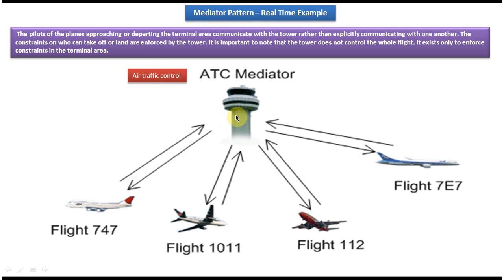Once the pilot in flight 747 gets the confirmation, he will land the flight in the particular airport terminal. In this way we can avoid collision.